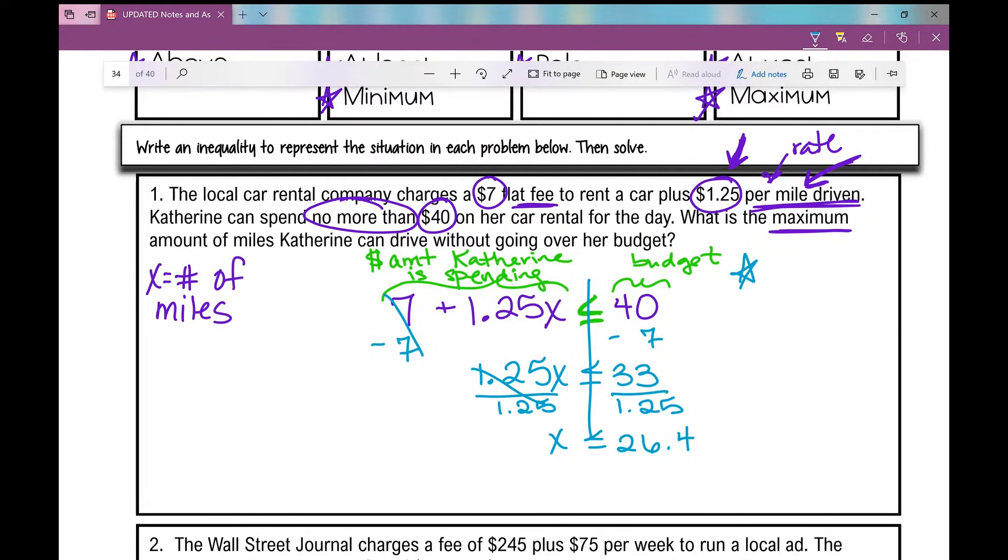And I get X is less than or equal to 26.4. X can be anything less than or equal to 26.4 miles. Now, because you're charged per mile when you're getting a rental car, we're going to have to round down in this case.